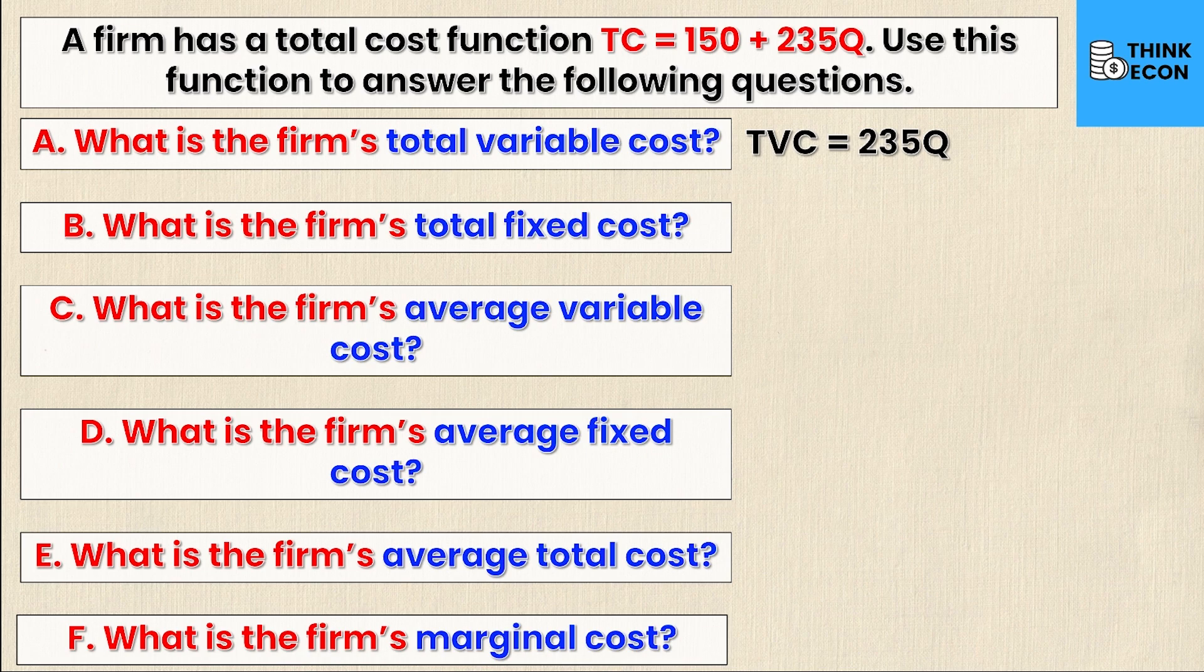And so we can see that the total variable cost is equal to 235Q. Since 235 is the cost per unit, and that will go up or down depending on how many units you produce, as that's what's denoted by Q. Well, then it should be simple for us to see the fixed cost because that would be the part of the total cost that is not dependent on Q whatsoever.